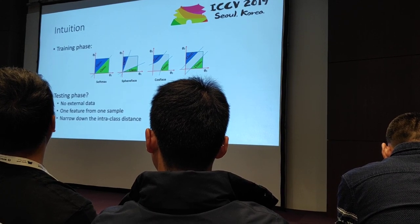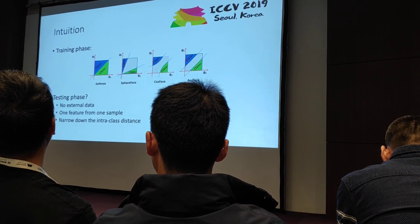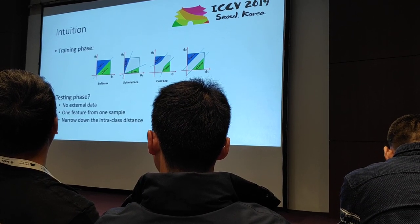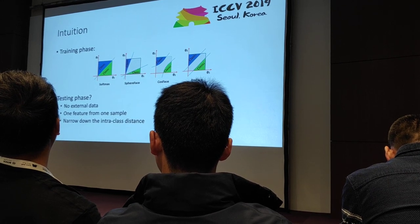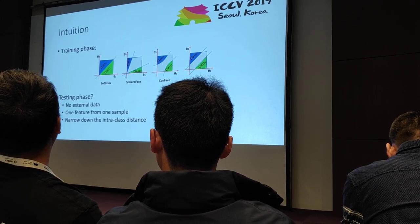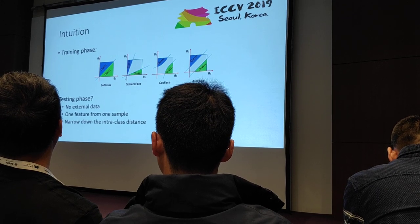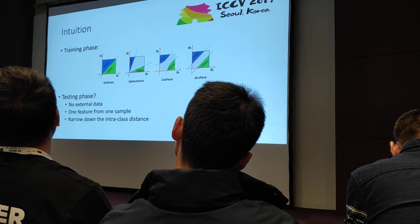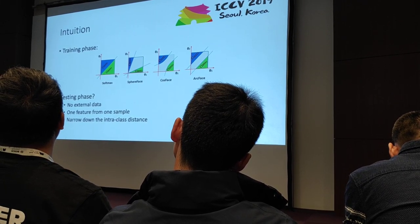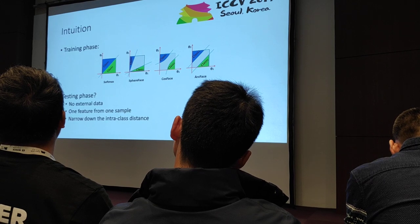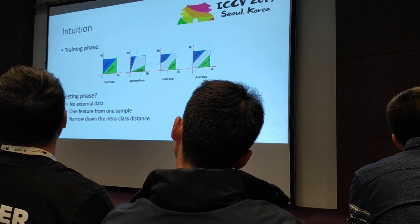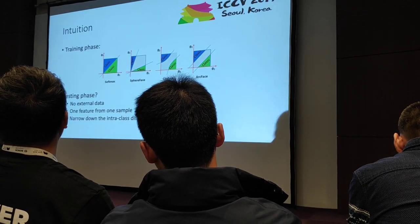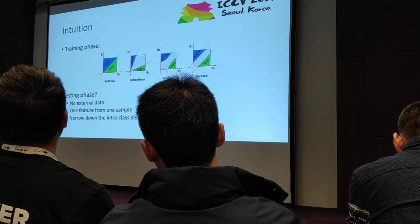How about we apply this concept in the testing phase? Can we narrow down the intra-class distance? Yes, of course. But we have several constraints. The first one is no external data, so we are not allowed to train external models — we don't allow training a graph convolutional network or another aggregation network. The second constraint is one feature from one testing sample. And the third is our target: we want to narrow down the distance between samples of the same class.